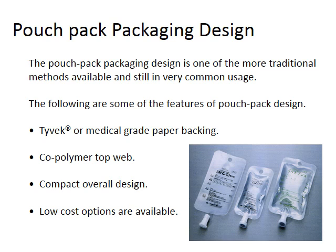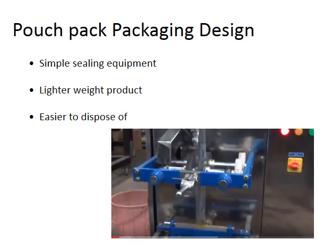Pouch packing is one of the more traditional methods and is still in common use. These examples of pouch packs are holding some sort of saline or isotonic solution. They can have a Tyvek or medical-grade paper backing like blister packs. The top web is a cold polymer — it's compact, lower cost, and doesn't offer as much product protection, but it's cheaper to manufacture and more flexible.